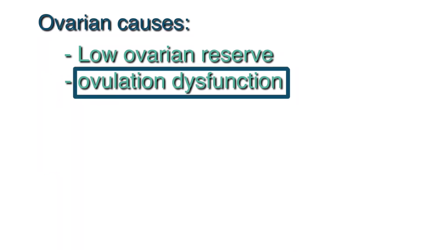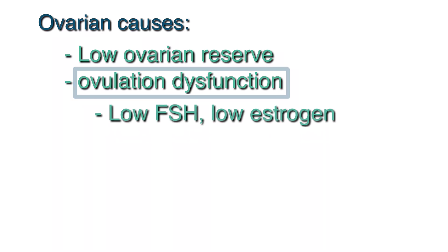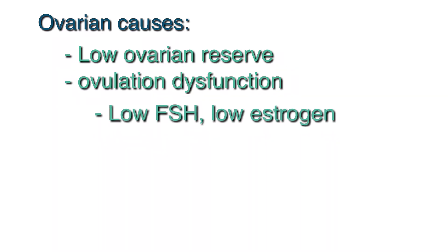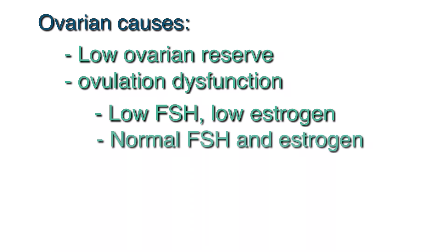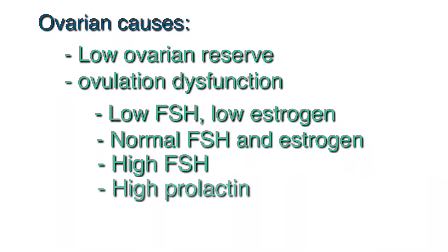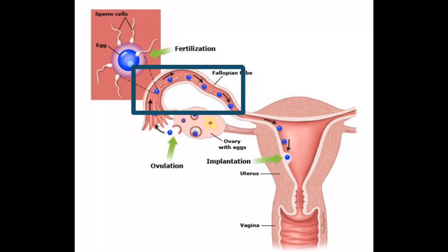There are a few causes for ovulation dysfunction and they generally fall into four categories. The first: patients with low FSH and estrogen levels — the body essentially stays in a quiet state. Examples include extreme physical, nutritional, or emotional stress, extreme weight loss, or extreme exercise such as marathon runners. The next group have normal FSH and estrogen levels but still don't have normal cycles — an example is PCOS patients. The next group have high FSH levels, such as patients with premature ovarian failure. The last group have high prolactin levels that prevent them from ovulating.